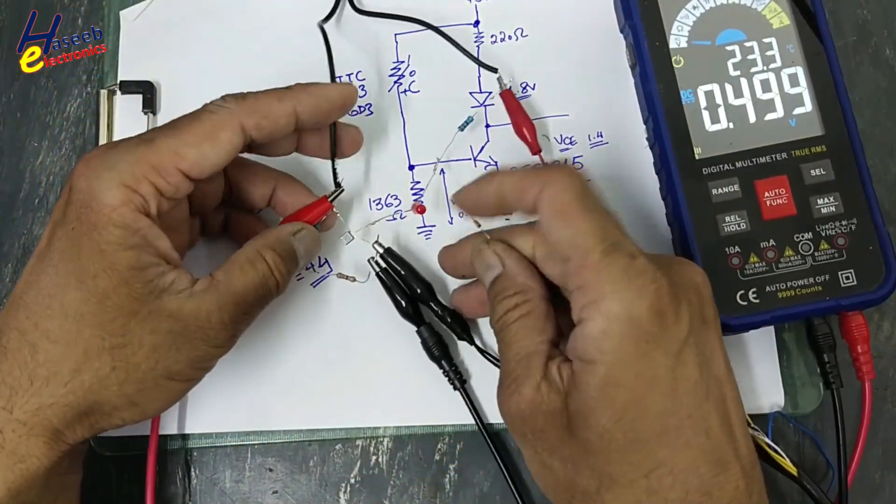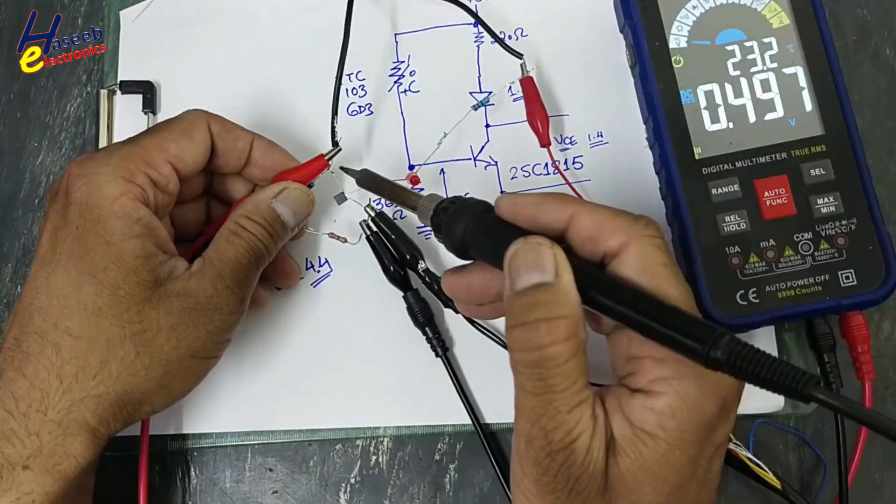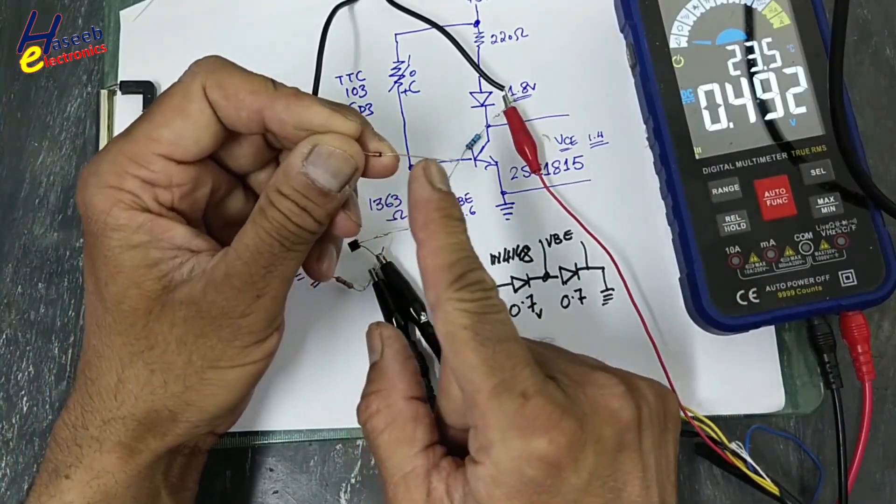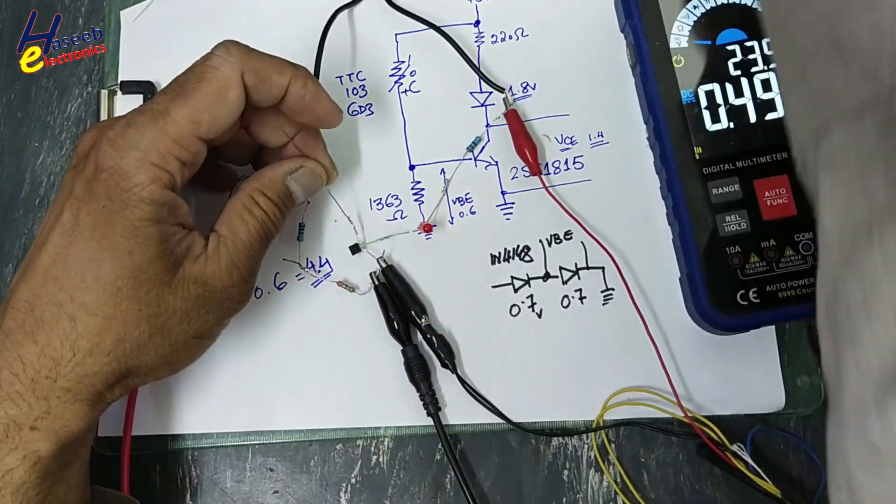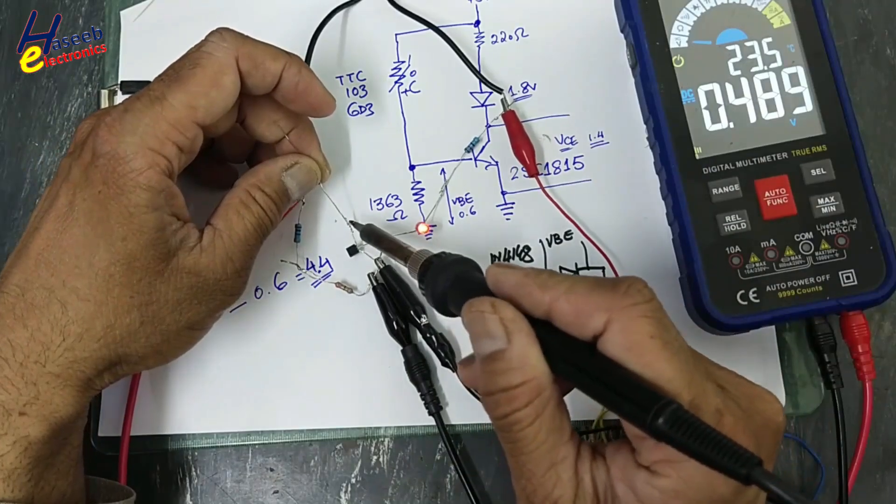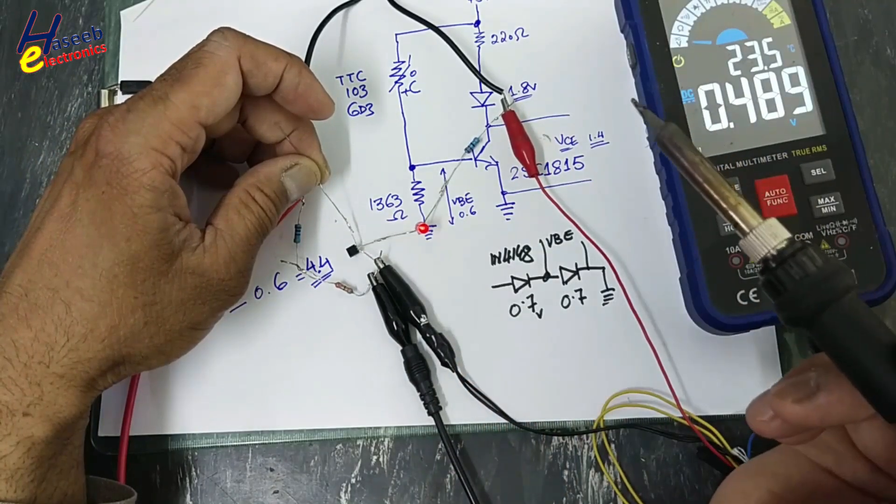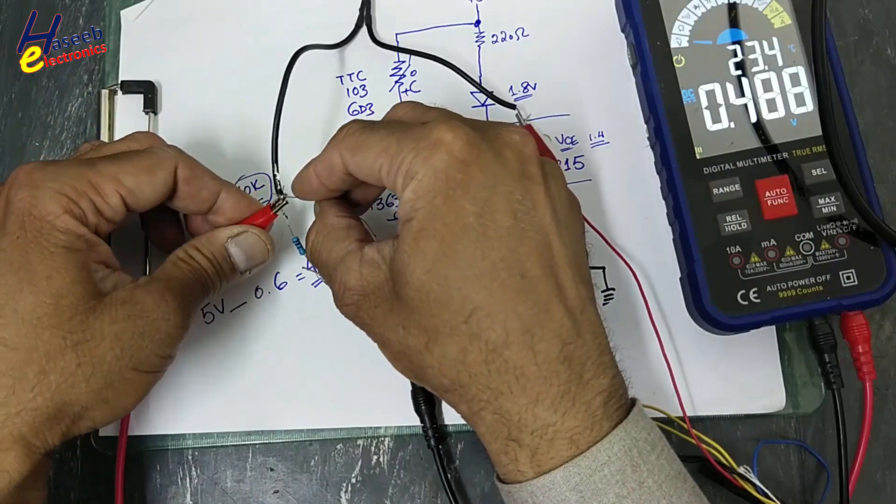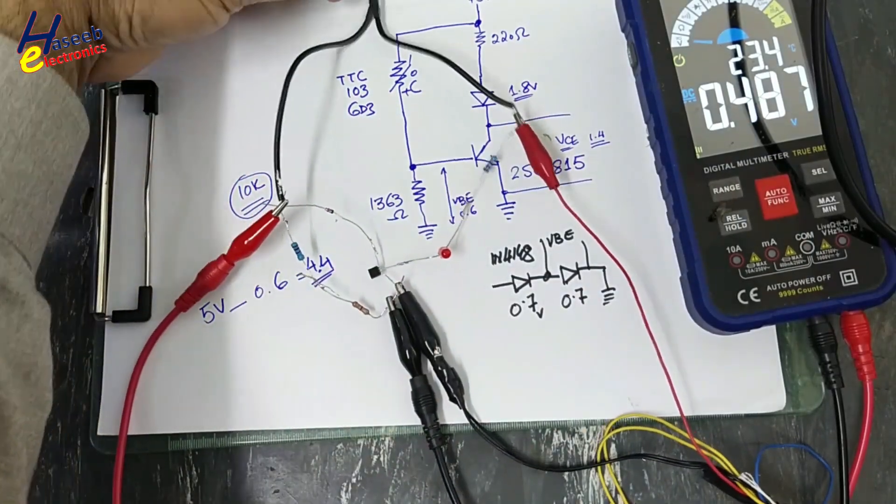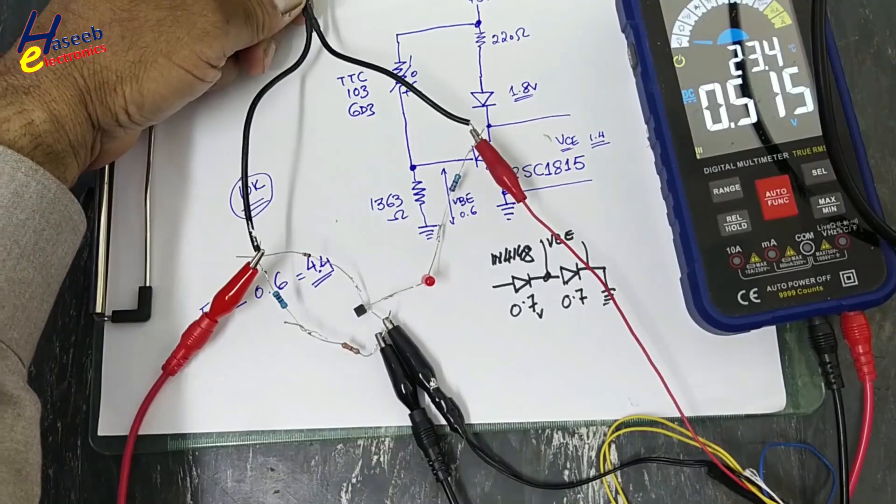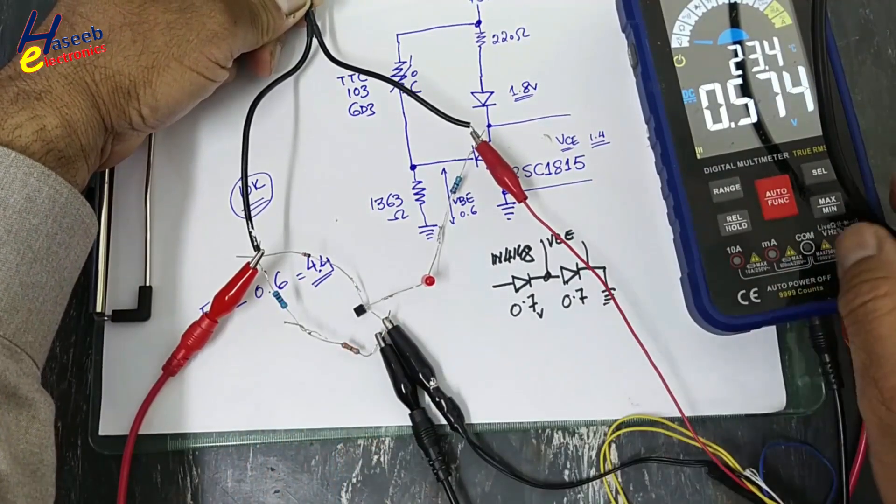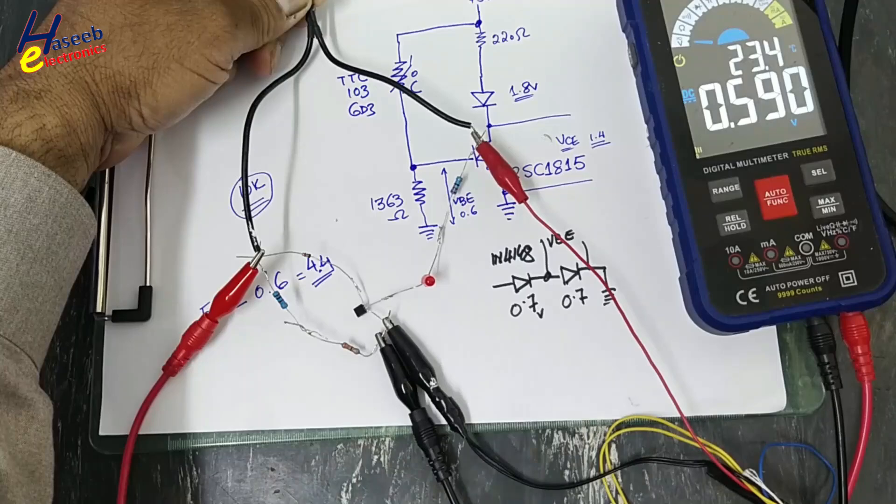Let's connect it. We will disconnect the base. At the base we will connect this cathode. Before this, if I was touching here, it was turning on, but now it will not turn on.